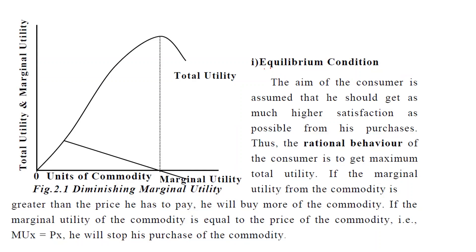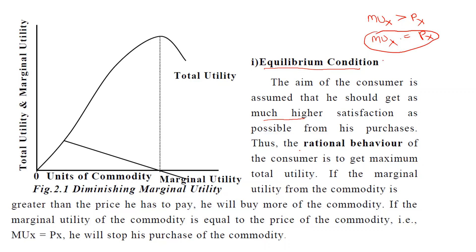When is the consumer said to be in equilibrium according to this law? The aim of the consumer is to get as much higher satisfaction as possible — that is the rational behavior of the consumer to get maximum total utility. If marginal utility from the commodity is greater than the price he is going to pay, he will buy more. If marginal utility of X is greater than price of X, he will purchase more of X. When marginal utility of X equals price of X, he will stop further purchases. This is the equilibrium condition.